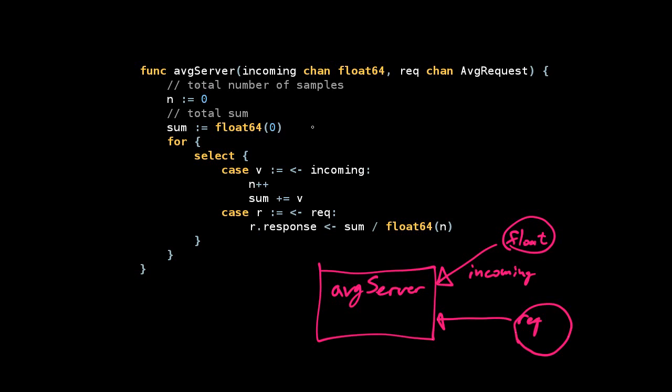What's it doing? You can see here it's setting n equal to zero to start, and it's setting a sum equal to zero. Then this is an infinite for loop—that means loop forever.